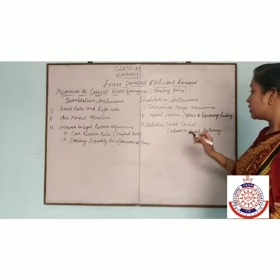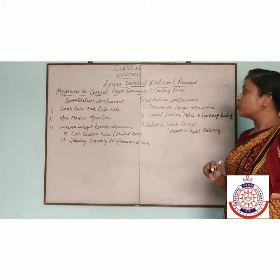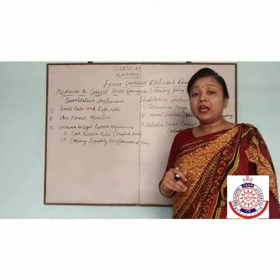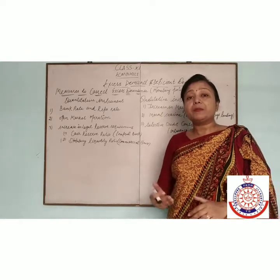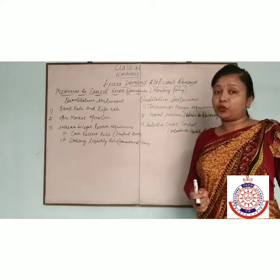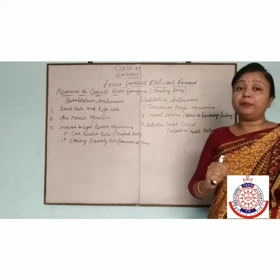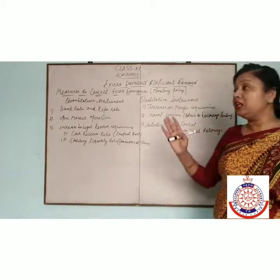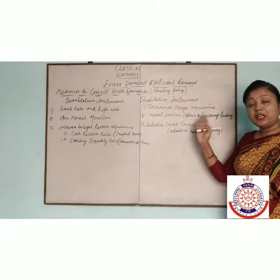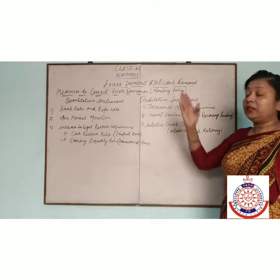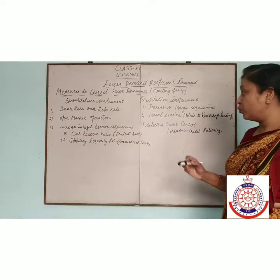Second is moral suasion. Moral suasion means advice to discourage lending. RBI advises the commercial bank — because RBI is a lender of last resort — to lend less money to the public. If less money is lent to the public, then the problem of excess demand will be removed.